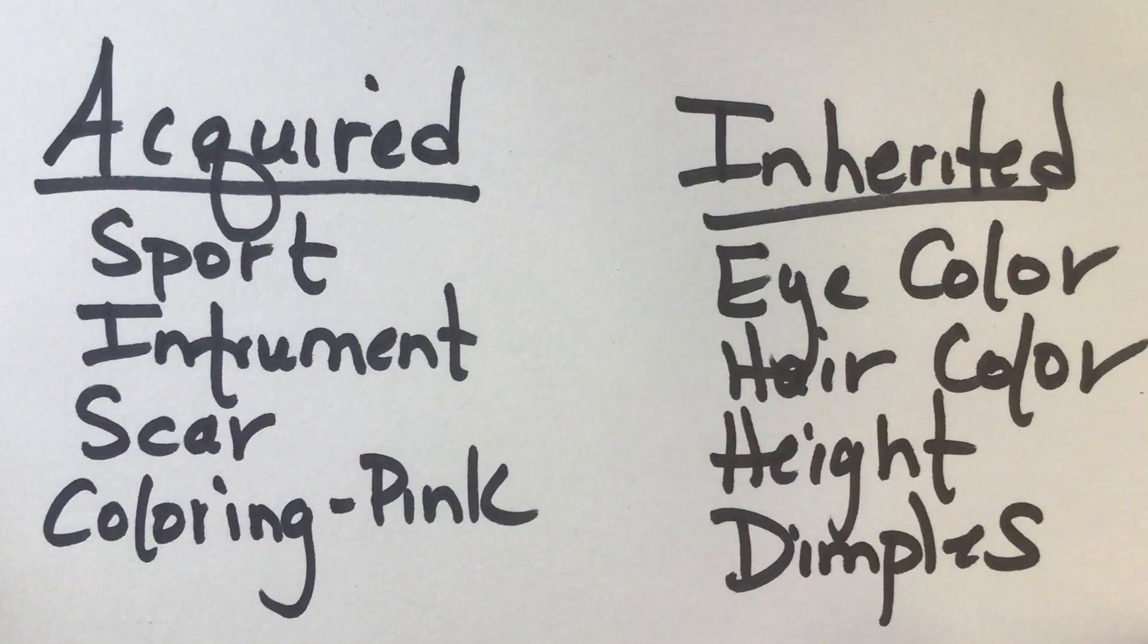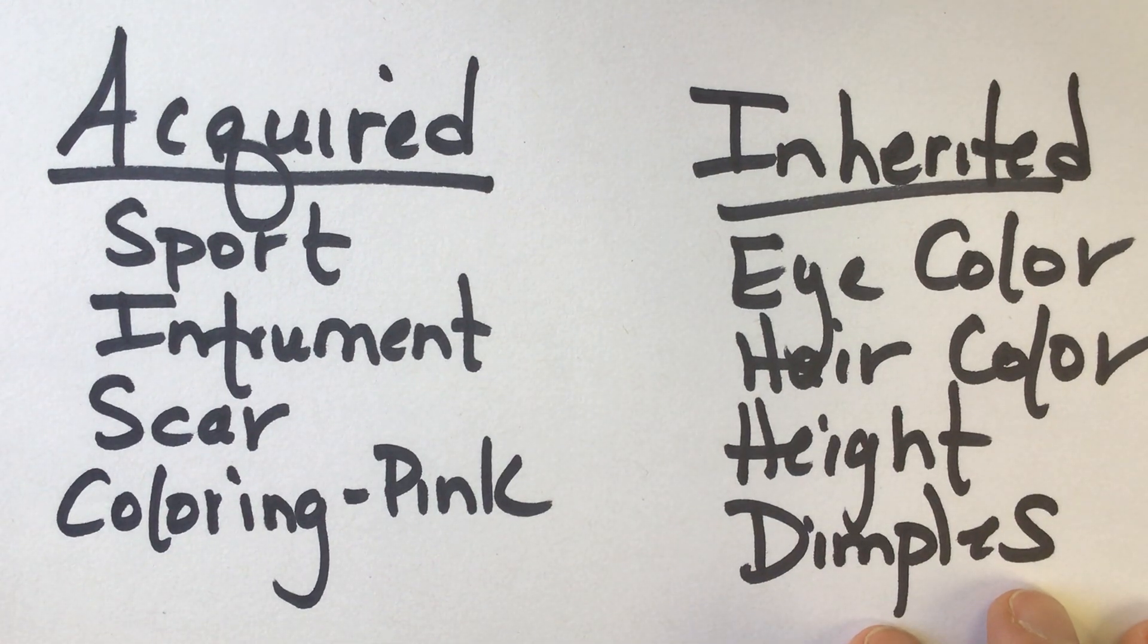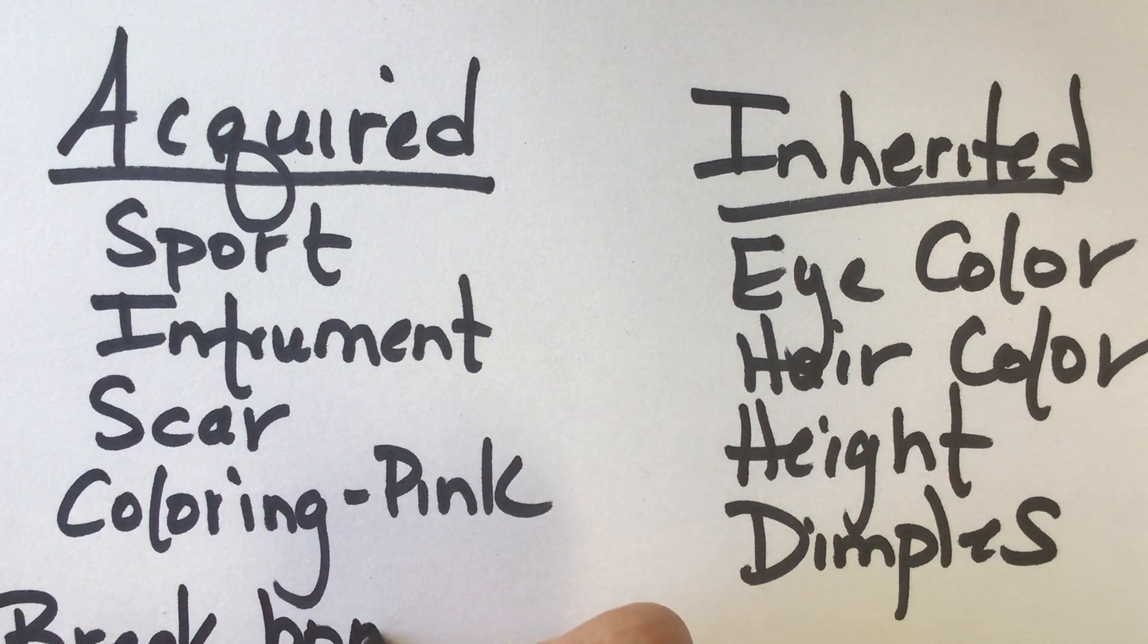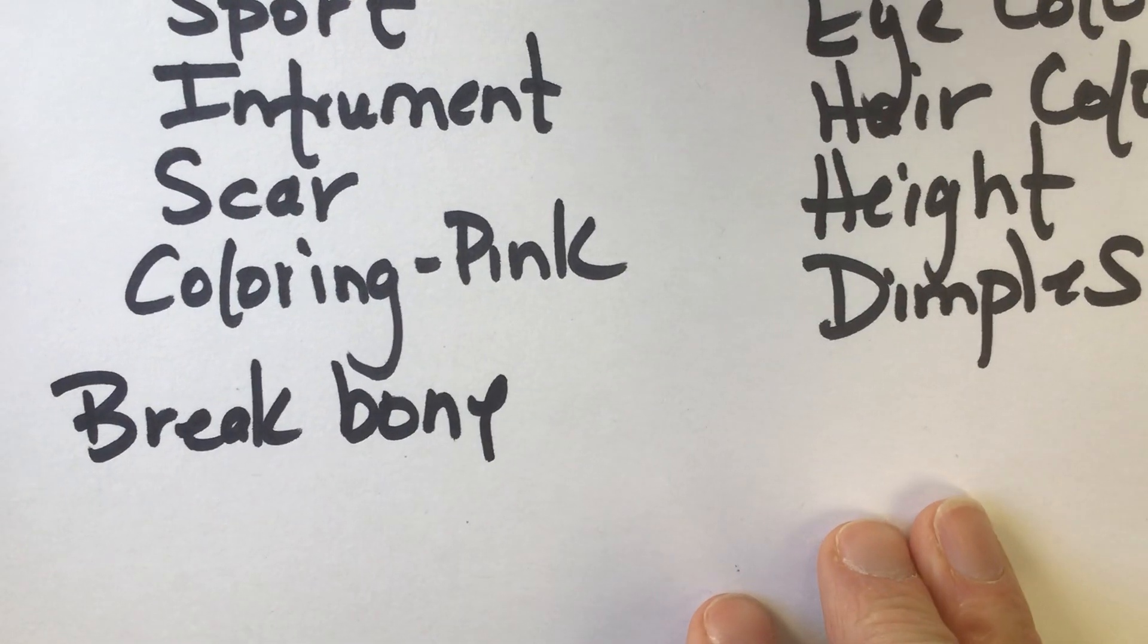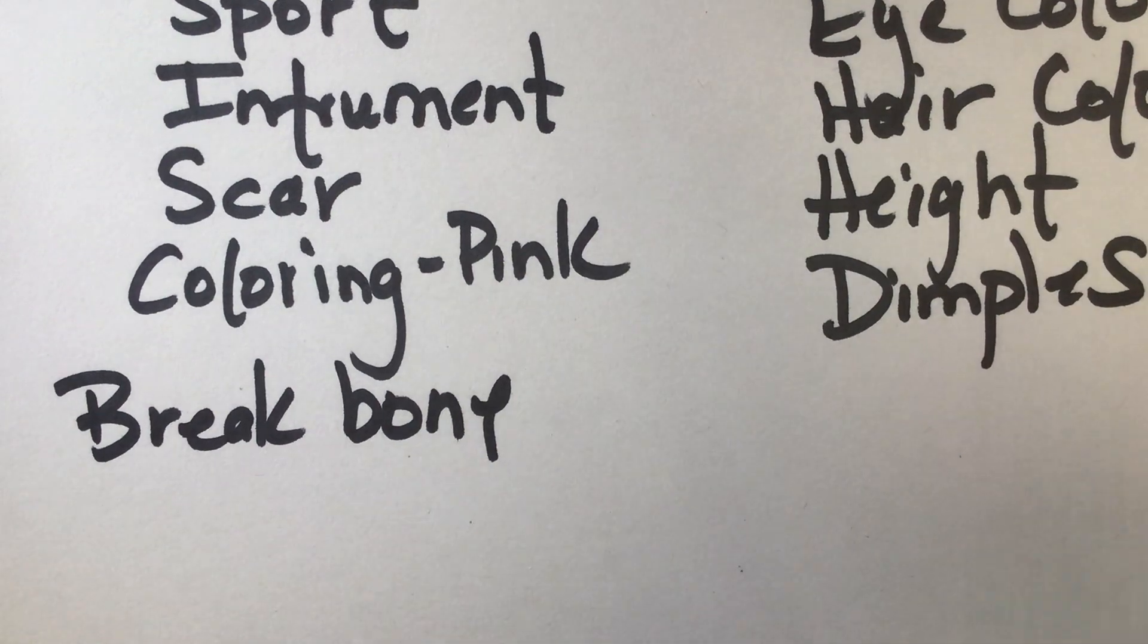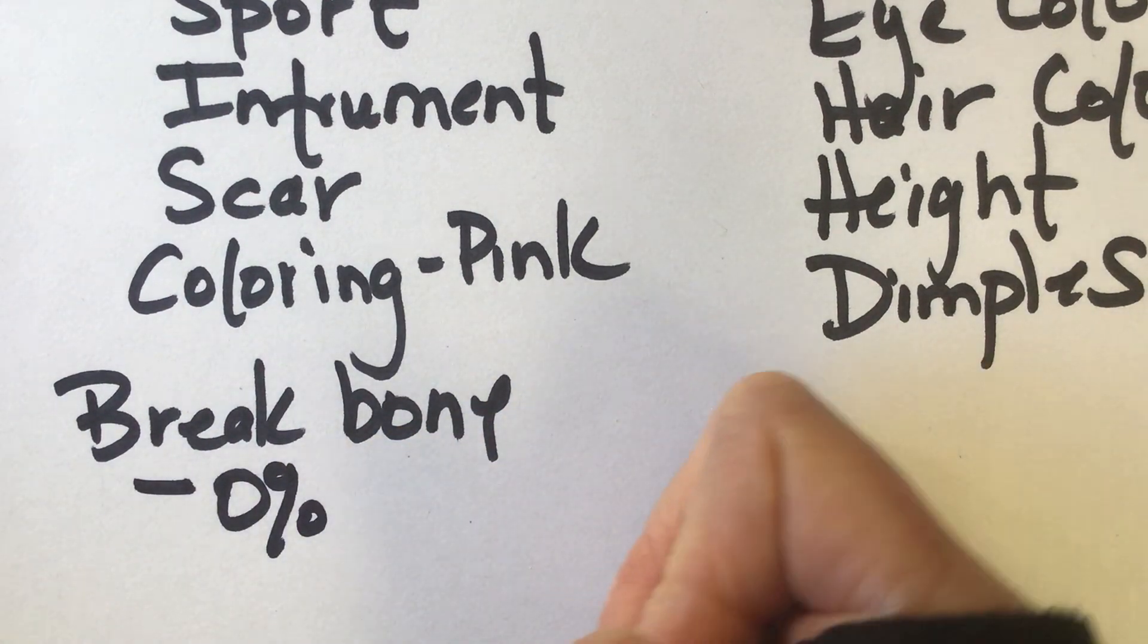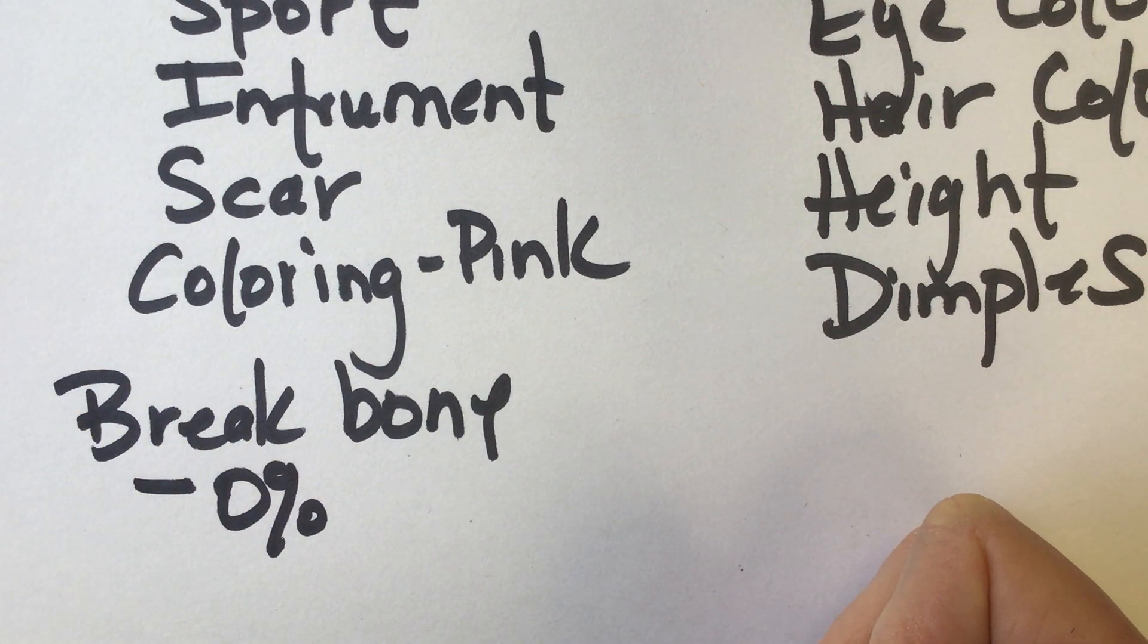If you acquire it, you gained it during your lifetime. So for example, if you break a bone, that was one of the examples on the test. If you break a bone, that's an acquired trait. You can't pass that acquired trait on to your children. So 0% of your children will have that trait in the next generation. Because you can't pass on an acquired trait.